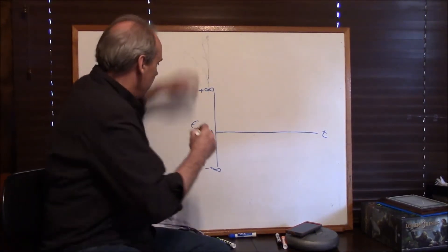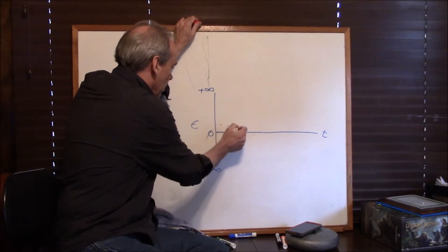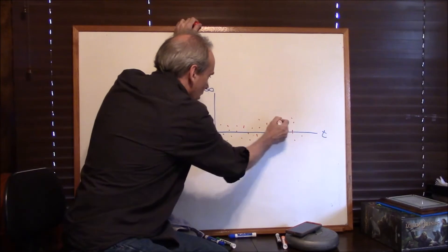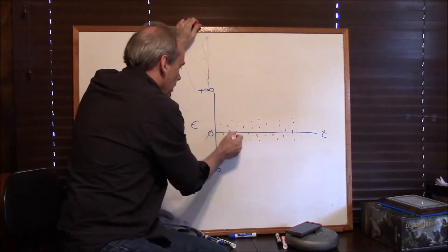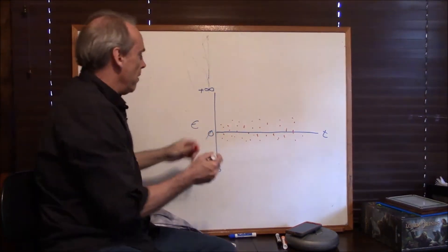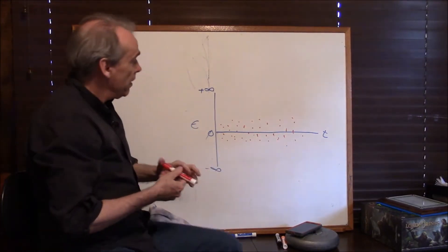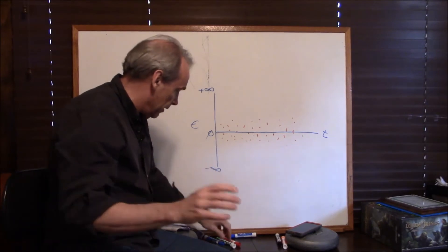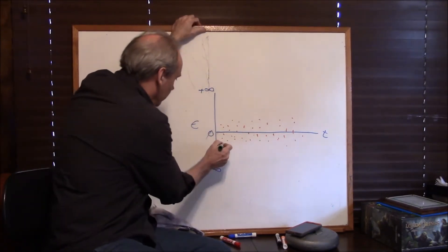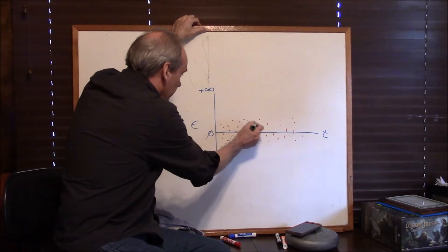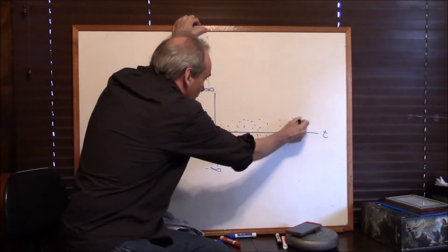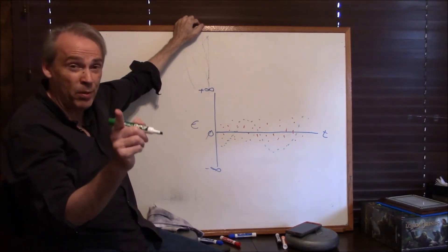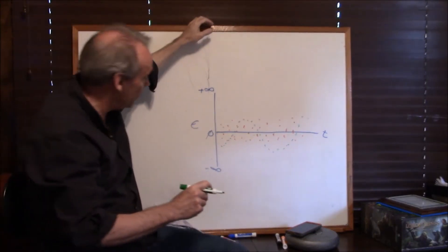Do the error terms look random — kind of averaging out to zero with no pattern? Or do they average out to zero but show a very clear pattern? That's a problem. That's a violation of one of the classical assumptions.